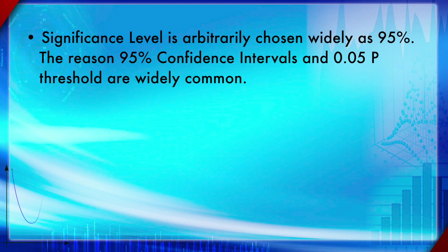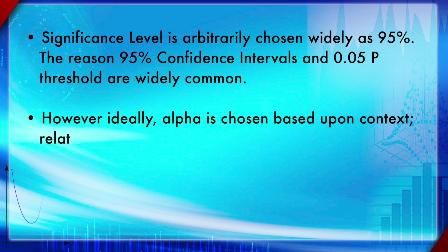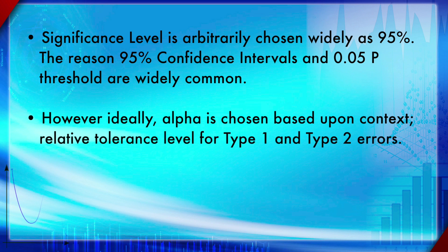The significance level is arbitrarily chosen, and 0.05 is widely used, corresponding to a 95% confidence level. The 0.05 p-value threshold and the 95% confidence interval are quite commonly used together. However, ideally alpha should be chosen based on context.